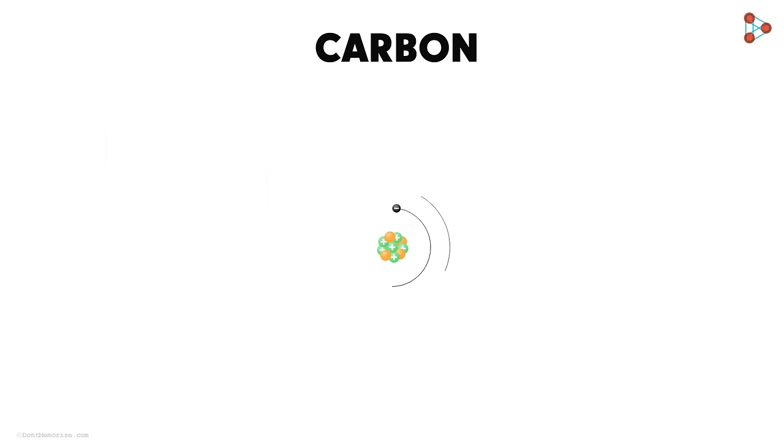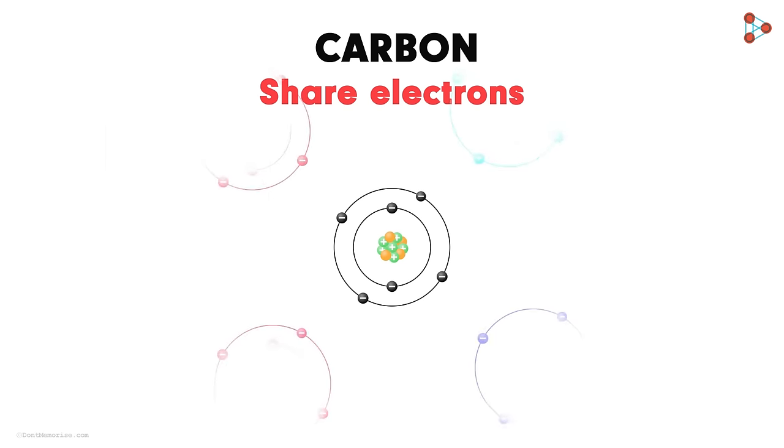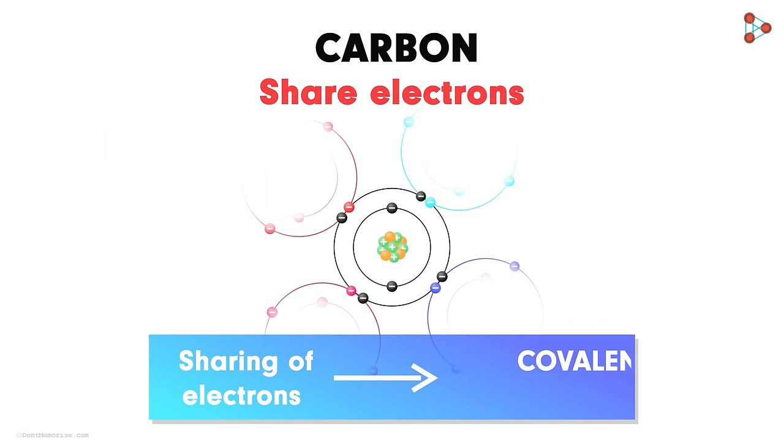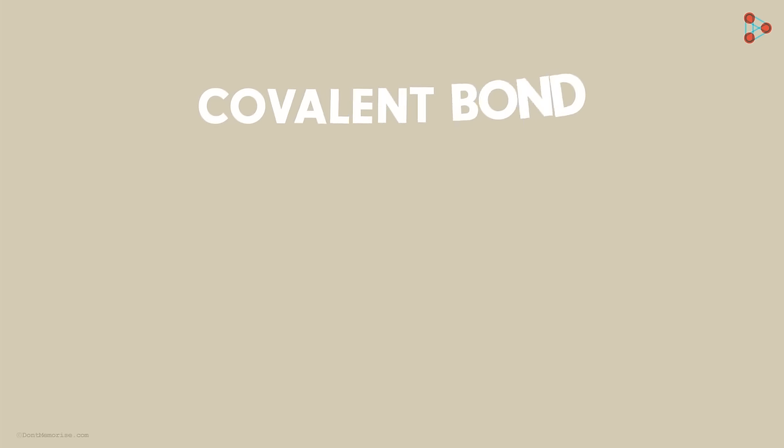So the option that carbon adopts is to share electrons. Sharing in carbon can take place up to 4 electrons. That means carbon can share all its valence electrons with any other atom. We know that such sharing of electrons leads to a special type of bond formation called the covalent bond. So to understand carbon chemistry, we need to understand covalent bonds first.